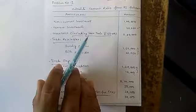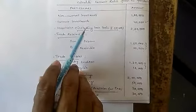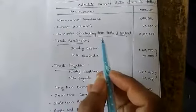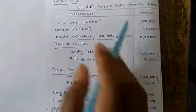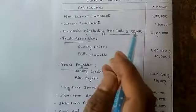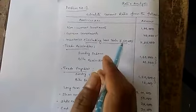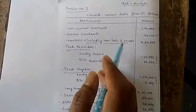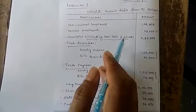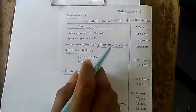Welcome to Johnson Grammar School online classes. This is Ravich Andharsar, accountancy faculty. We have already started the ratio analysis chapter from the last two sessions, and this is the third session where we are going to discuss the ratio analysis chapter.